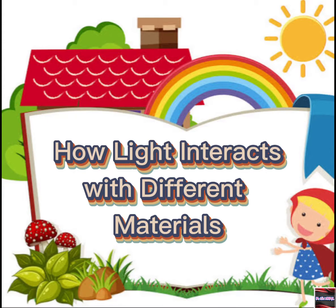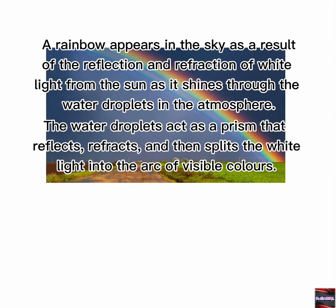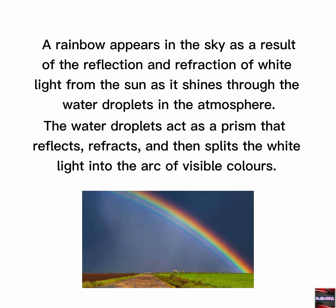How Light Interacts with Different Materials. The appearance of a rainbow in the sky never ceases to amaze us. A rainbow appears in the sky as a result of the reflection and refraction of white light from the sun as it shines through the water droplets in the atmosphere. The water droplets act as a prism that reflects, refracts, and then splits the white light into the arc of visible colors.